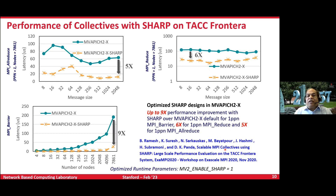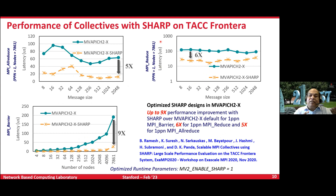Many HPC applications, and especially deep learning and machine learning applications, focus heavily on collectives. Collectives have two varieties: blocking and non-blocking. For blocking collectives, here are some numbers taken with SHARP — a product from Mellanox/NVIDIA that we've tightly integrated — taken on the TACC Frontera system, which is the largest InfiniBand system with close to 8,000 nodes. Compared to MVAPICH2-X with a software design, with our SHARP integration we are able to significantly improve performance of all-reduce and barrier operations.